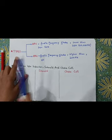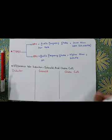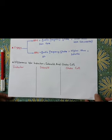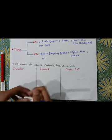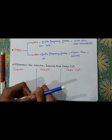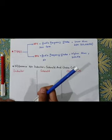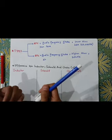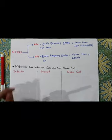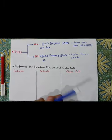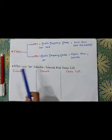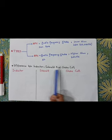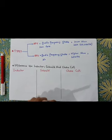Since SLO-based papers include questions not directly given in the book, I will now explain the difference between an inductor, a solenoid, and a choke coil — three concepts that students often confuse.